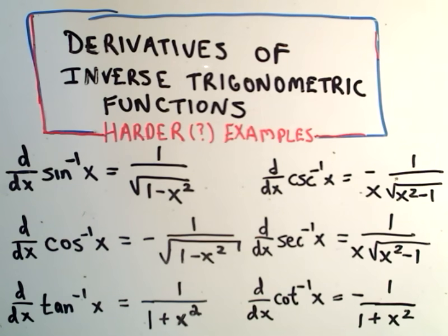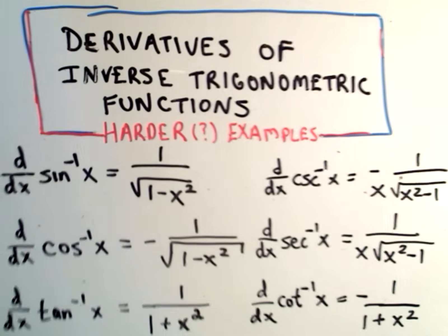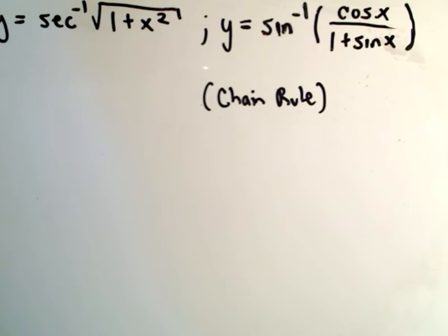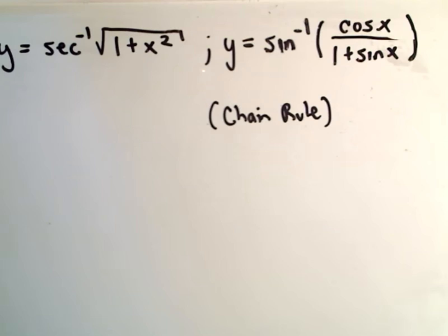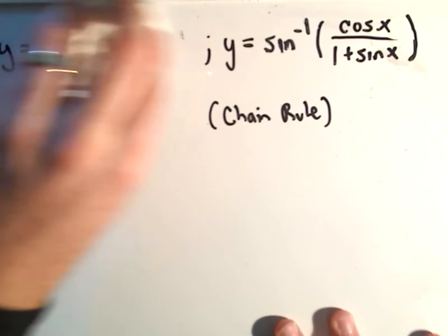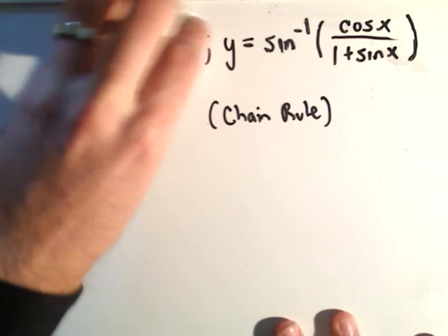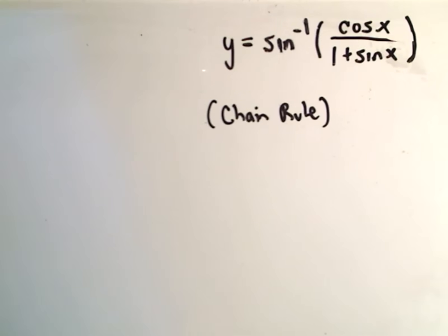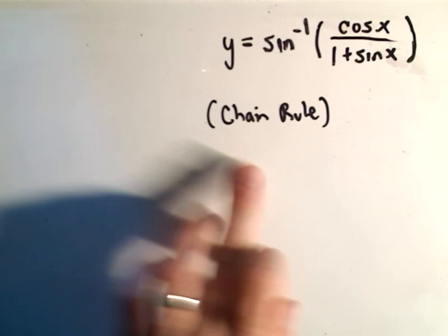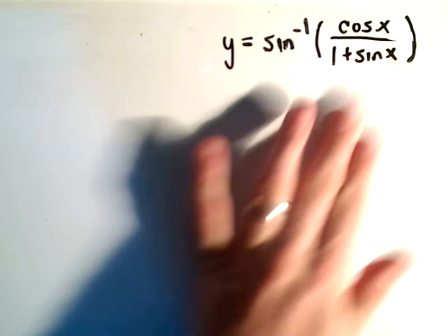In this video I'm going to do yet another derivative of inverse trig functions — this should be number three. I'm going to do one that's a little bit harder. So I'm going to do the derivative of arc sine of cosine x divided by one plus sine x. We're going to have to use the chain rule on this one.